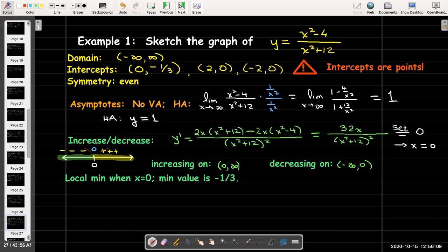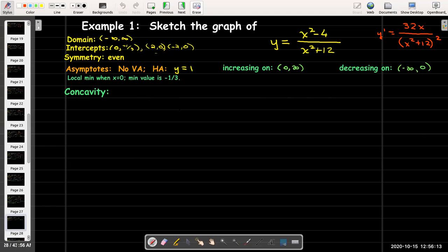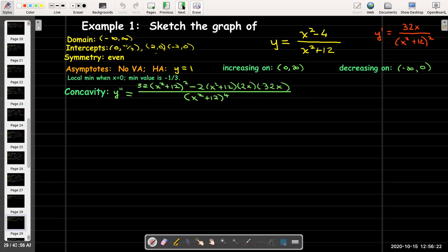I'm running out of space, so let me summarize the information we've got so far before I calculate the concavity. Remember for the concavity, I need to calculate the second derivative. I have my expression for the first derivative over here. I'll have to use the quotient rule. I just took the derivative of the top times the bottom minus the derivative of the bottom.